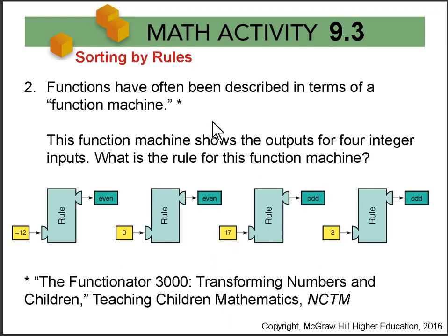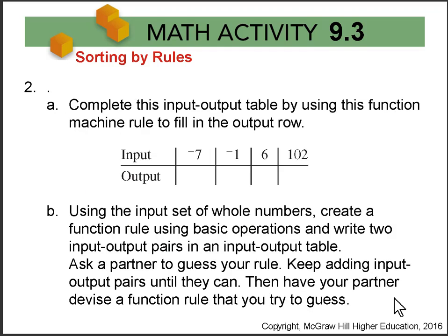Now in number two, we're going to think about the function machine, which is a great way to think about functions with kids. This function machine shows the outputs for four integer inputs. So our input set is integers here. And what is this rule? You can see here that negative 12 goes into the function machine and comes out even, zero goes into the function machine and comes out even, 17 goes into the function machine and comes out odd, negative 3 goes into the function machine and comes out odd. This is from a Teaching Children's Math article, which is a great journal for elementary school.